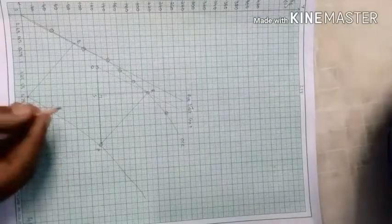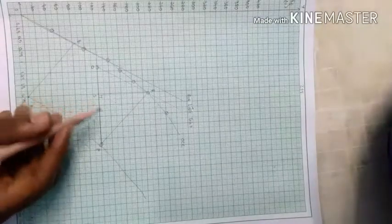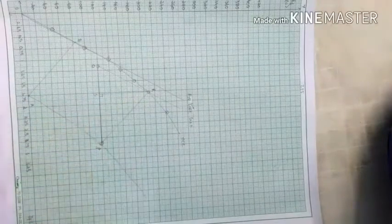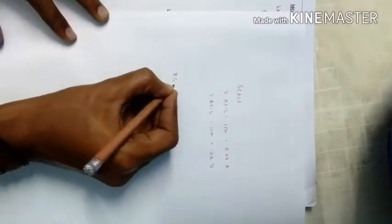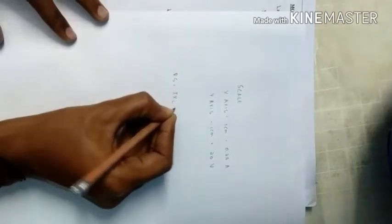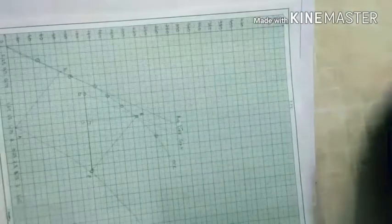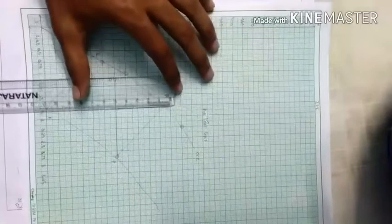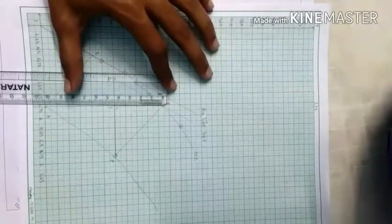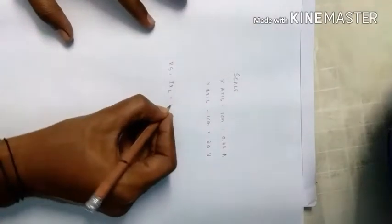To find the armature leakage reactance, measure the length RS. RS equals I times XL. That is length of RS, 4.5 times 20, which is the scale of the Y-axis, times 2, equals 90 volts.